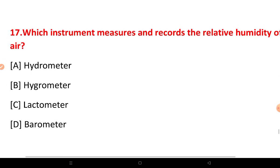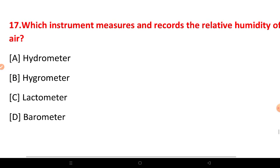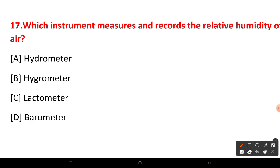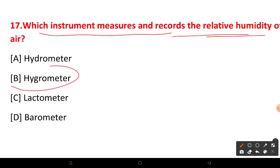Which instrument measures and records the relative humidity of air? This is a very important question. The correct answer is a hygrometer. A hygrometer measures moisture content using temperature, mass, mechanical, electrical, or chemical changes in moisture-absorbing substances.